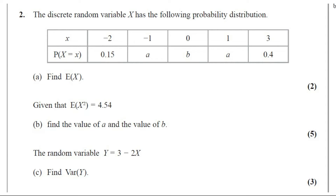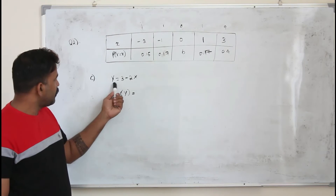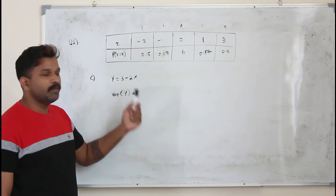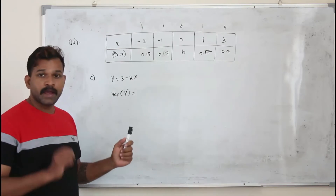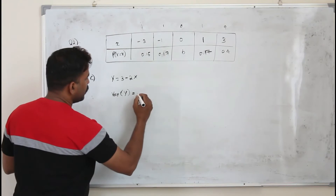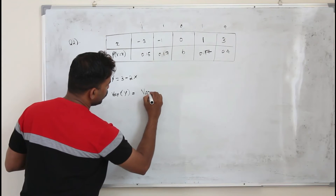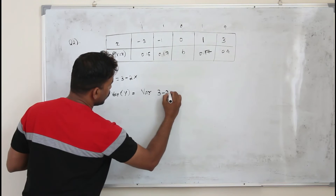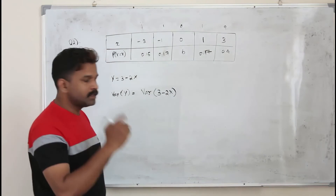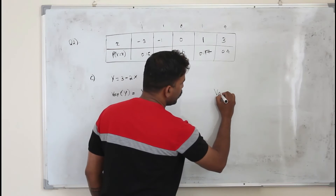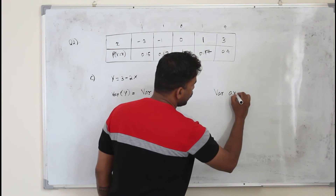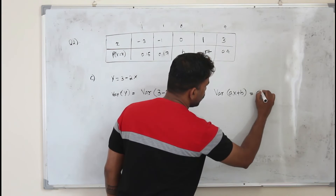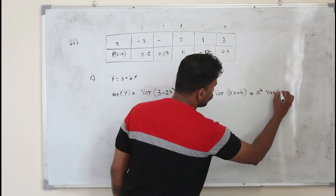The random variable y equals 3 minus 2x. Part C: find variance of y. This question carries 3 marks. In part C, you have another variable y equals 3 minus 2x, and they want you to find the variance of y. Replace y by this expression, so we need to find the variance of 3 minus 2x. Always remember this formula.